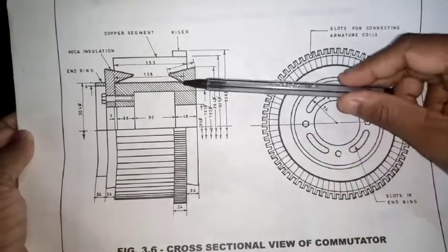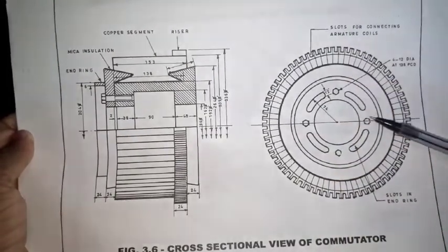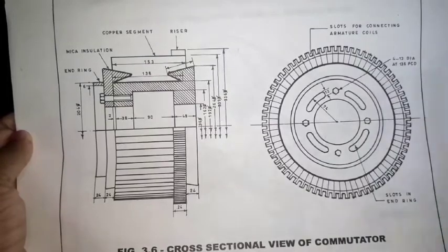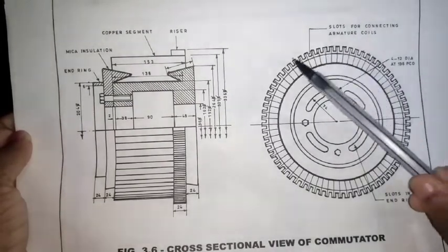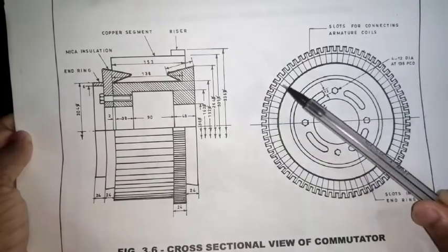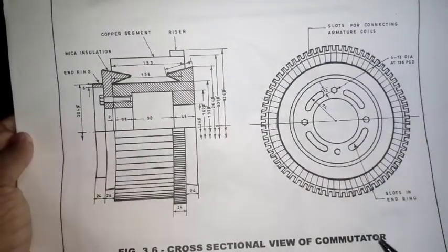If you extend it from here to here, you will get some points. Based on that, you can draw. The thing is that there must be slots on the outer periphery of the commutator. Just count the slots and draw them.